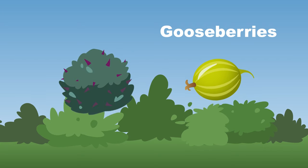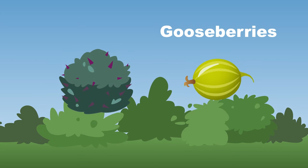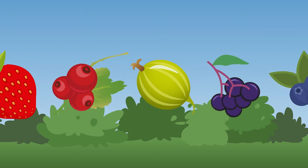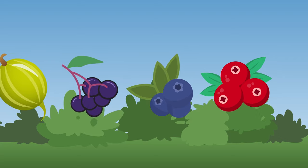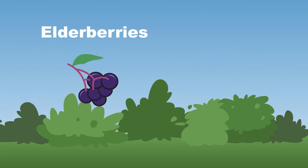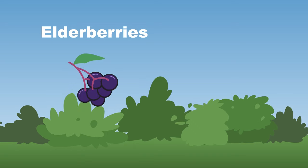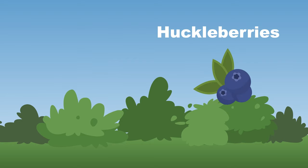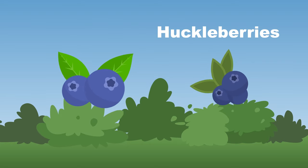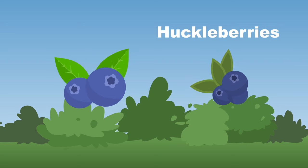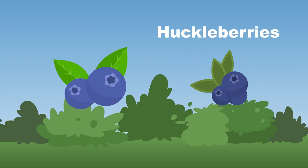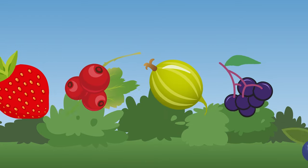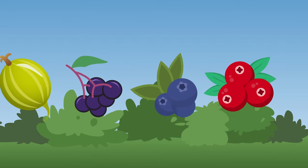What kind of berries grow on bushes? These are the most common berry bushes, now come and sing along. Elderberries grow on shrubs and are dark purple or black — they make elderberry syrup and jams, that's a fact. Huckleberries look very much like a blueberry — they have a sweeter taste and are smaller, you see.